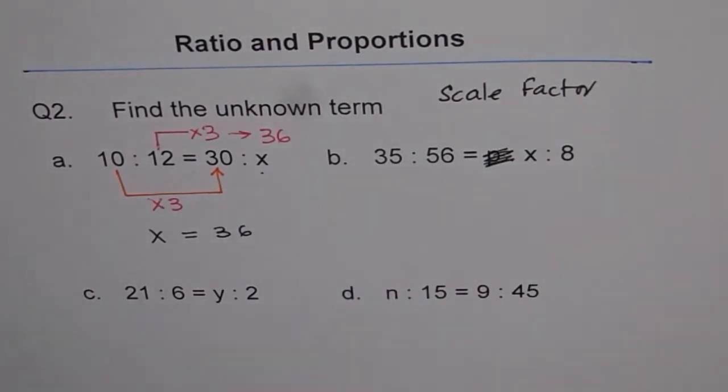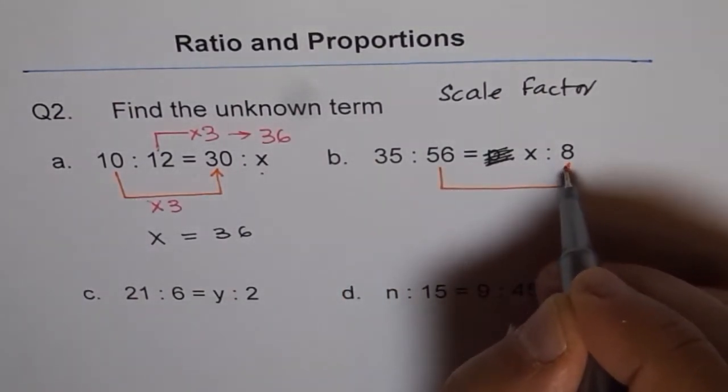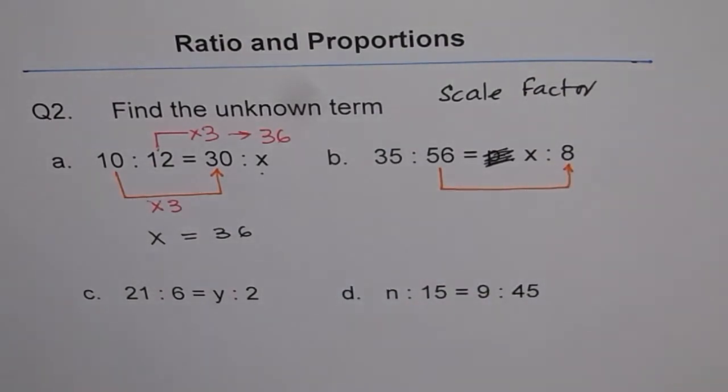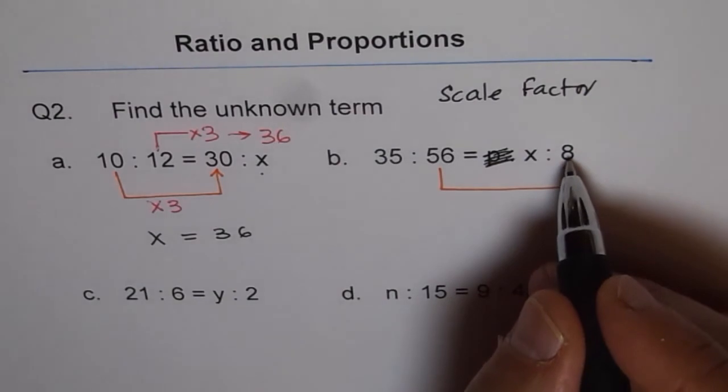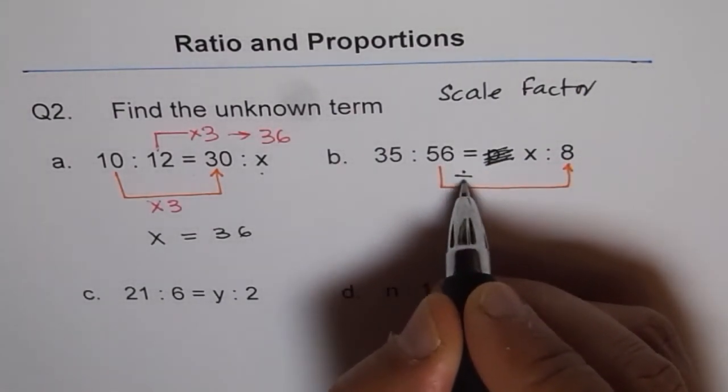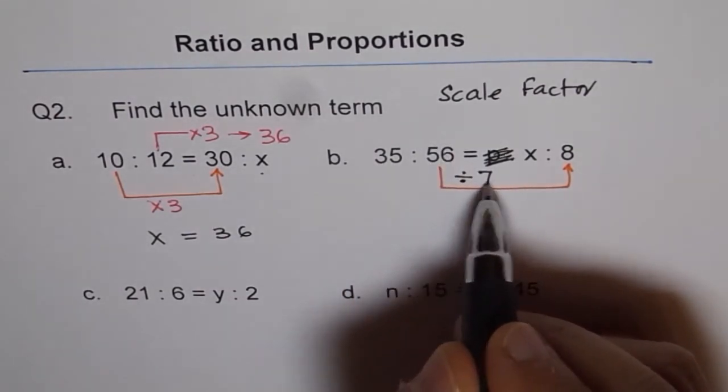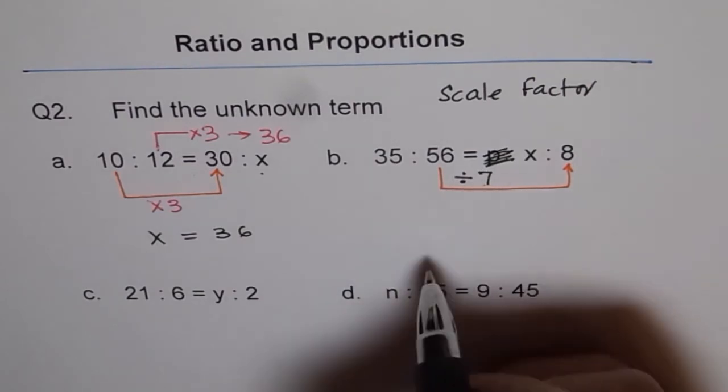Now we have to see how do we get 8 from 56. What is the scale factor? We know 7 times 8 is 56. So that means 56 is divided by 7. When you divide 56 by 7, you get 8. So scale factor is 1 over 7.